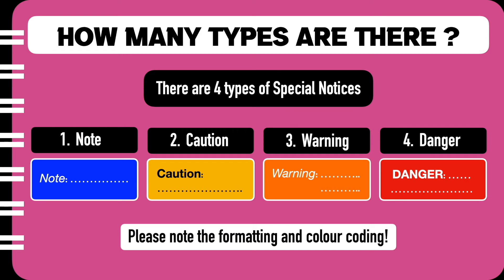For example, the word DANGER is written in capital letters and the box is colour coded in red. You will notice that the text starts immediately after the colon, and the text also comes on the second line after the danger word. Please note the other colours of blue, yellow, and orange for warning. So let us take each one and see an example.